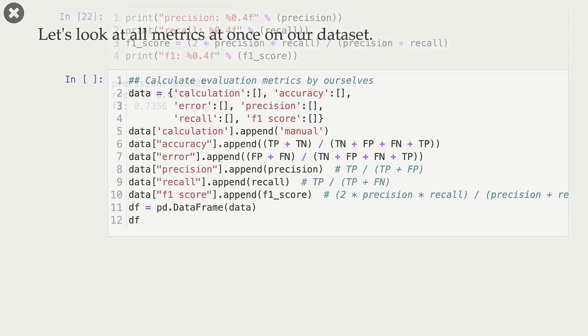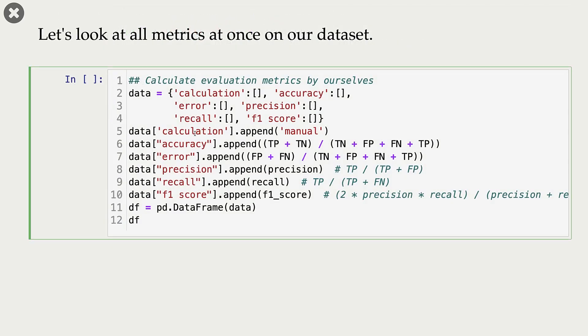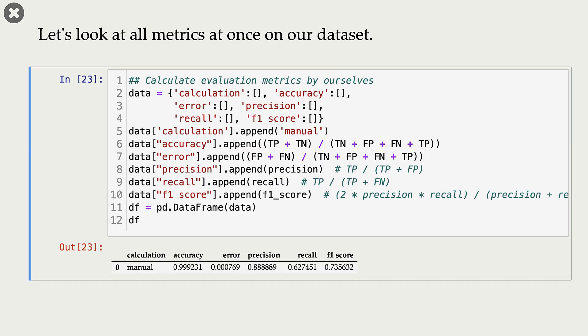Let's look at all metrics at once on our fraud data set. In our case, accuracy is pretty high, 0.999. Error is pretty low. Precision is reasonable, 0.888. Recall is kind of low. And F1 score is also kind of low.